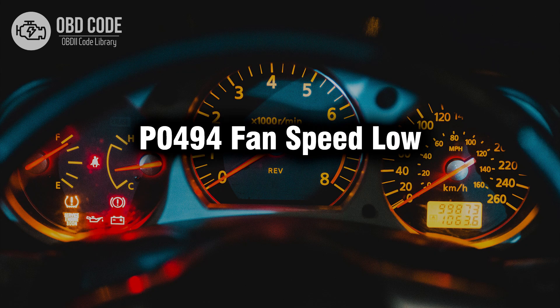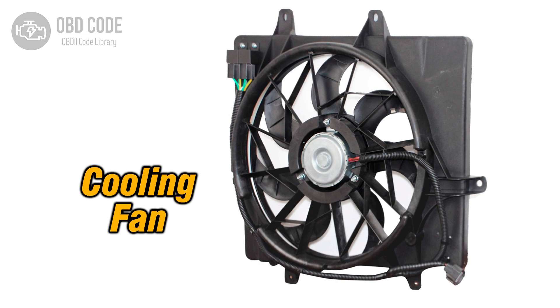Welcome. In this video we will talk about code P0494, its symptoms, causes and possible solutions. The P0494 trouble code indicates that the electric cooling fan is running at a lower speed than expected. The electric cooling fan helps regulate the temperature of the engine and prevent overheating by drawing air through the radiator when the vehicle is stationary or moving at low speeds.